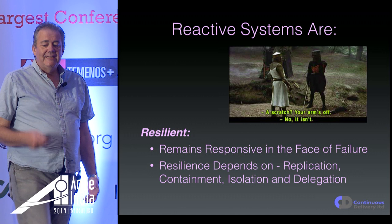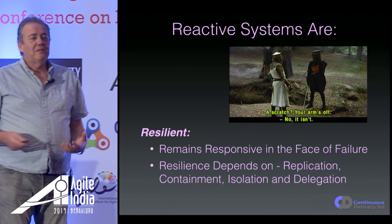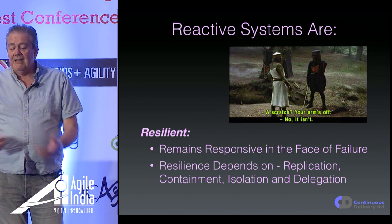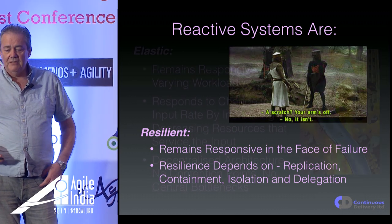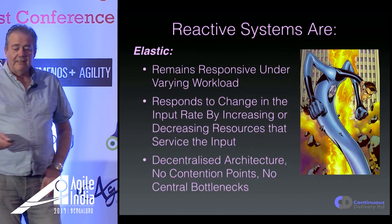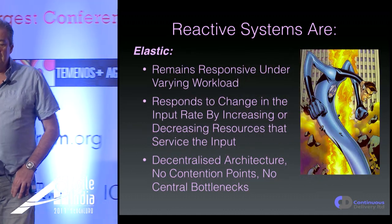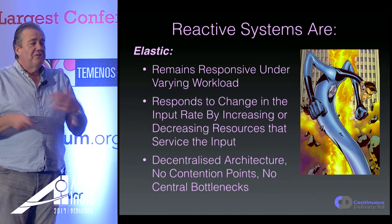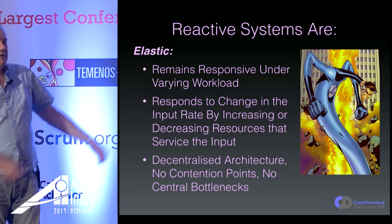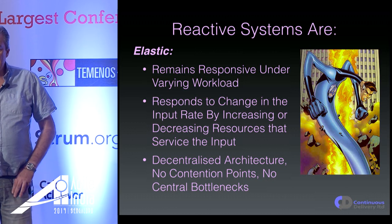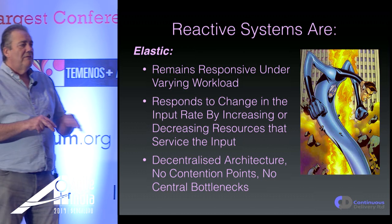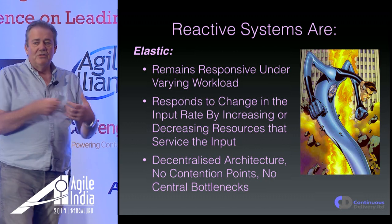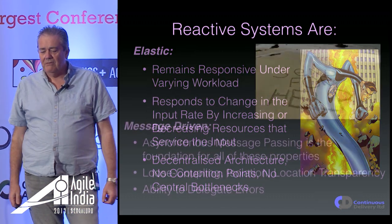Reactive systems are also resilient — they remain responsive in the face of failure. This depends on replication, containment, isolation, and delegation. They're elastic — they can scale up and down, remain responsive under varying workloads, and respond to change by increasing resources. These tend to be very decentralized architectures that duck contention points and bottlenecks in the processing of information.